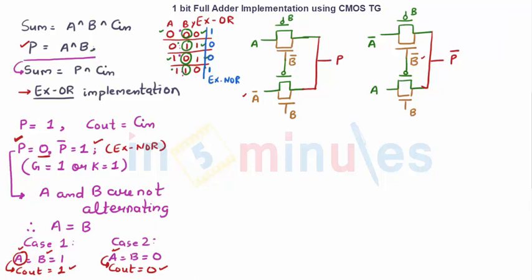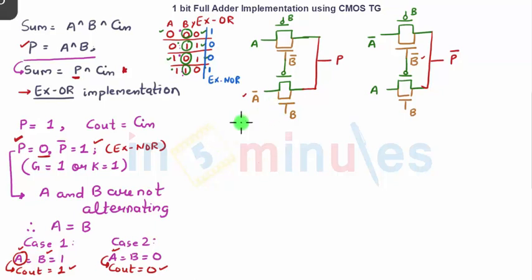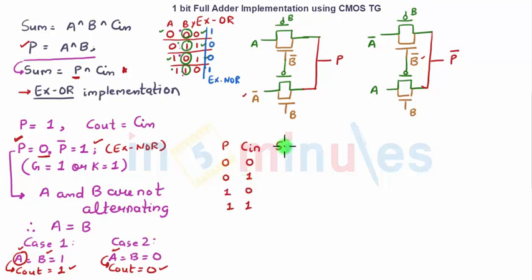Now let us go ahead and implement the sum. This is also a two-input XOR, where the inputs are now P (propagate) and C_in. Let us write the truth table: propagate and C_in are both XOR-ed, so sum = 0,1,1,0. We will implement it in exactly the same way as above.